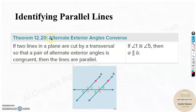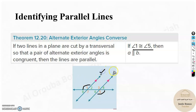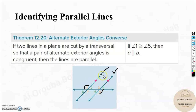Another theorem is the alternate exterior angle converse. Angles 1 and 5 are alternate exterior angles. If we find these two angles are congruent, then these two lines must be parallel. In the last lesson we had learned: if lines A and B are parallel and cut by a transversal, then angles 1 and 5 will be congruent. But here we start with angles 1 and 5 being congruent, and conclude that the lines are parallel. That is the converse.